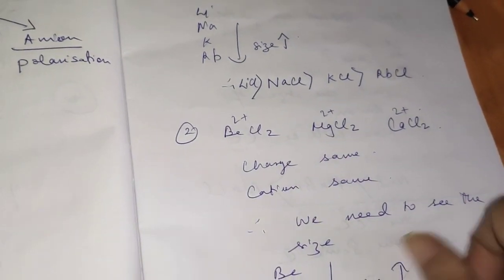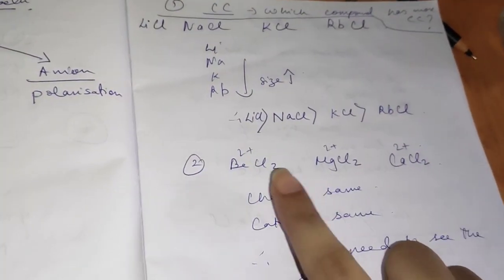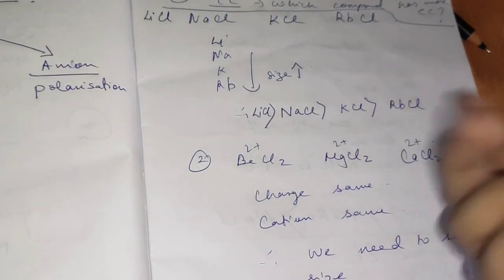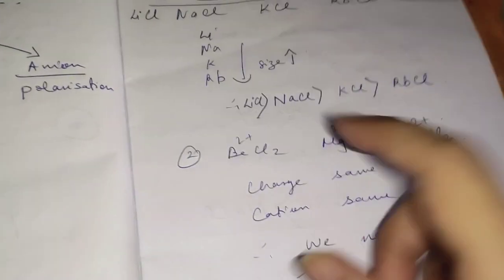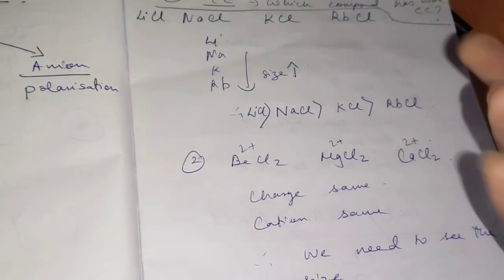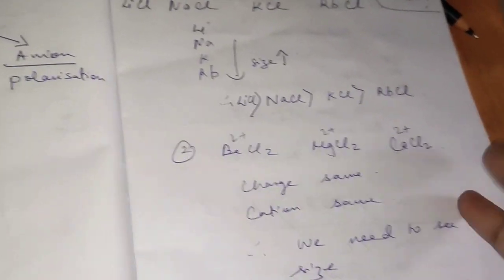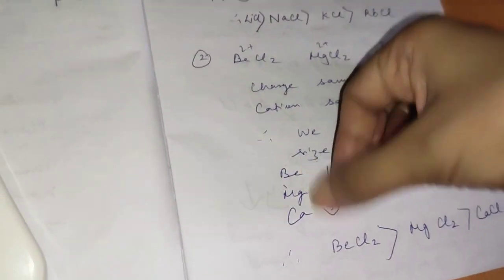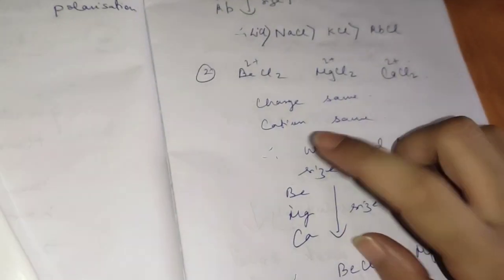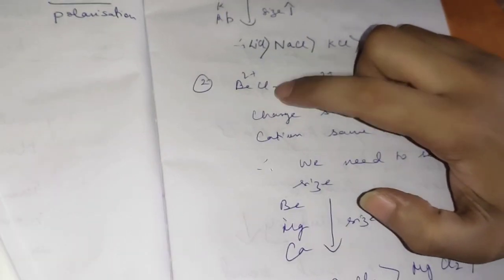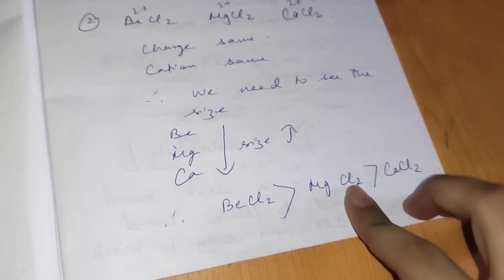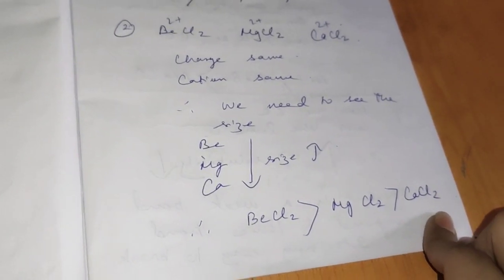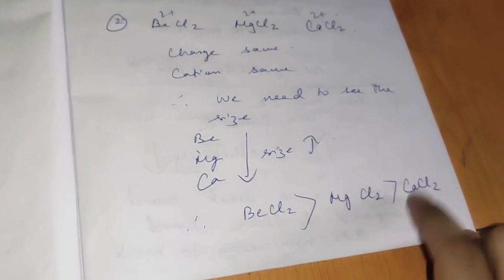Let's look at another example: BaCl₂, MgCl₂, and CaCl₂. The charges are all the same — Ba²⁺, Mg²⁺, Ca²⁺ — and the anions are the same. All three cations belong to Group 2, so we compare their sizes. As we go down the group, size increases. Therefore, Mg²⁺ is the smallest and has the most polarizing power, giving MgCl₂ the most covalent character, followed by CaCl₂, then BaCl₂.